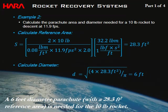Example 2: Calculate the parachute area needed for a 10-pound rocket to descend at 11.9 ft/s. Plugging these into the full equation gives a reference area of 28.3 ft². Converting to diameter yields a 6-foot diameter parachute.